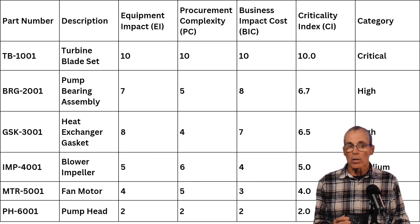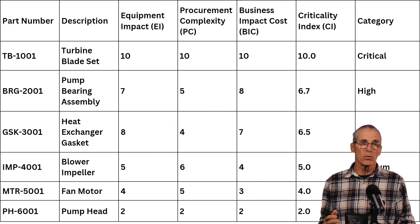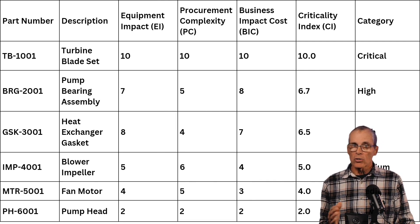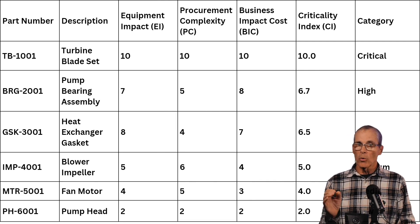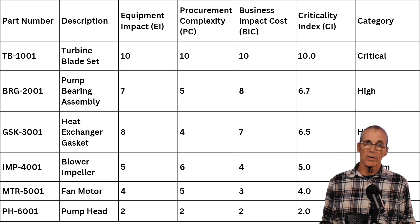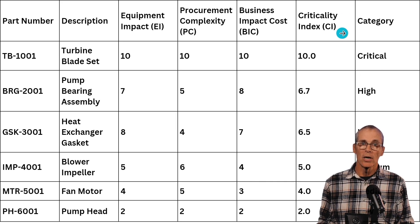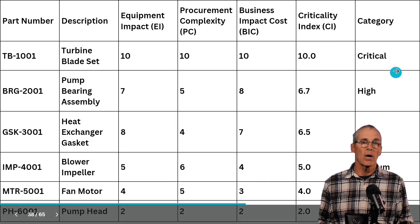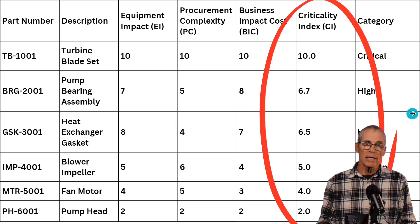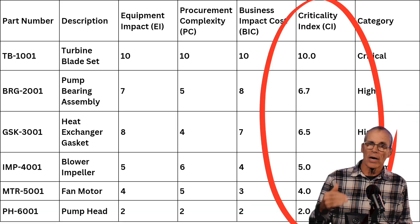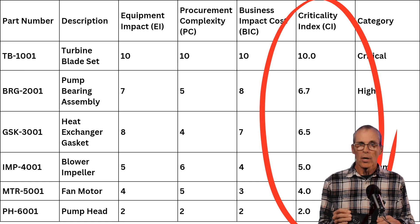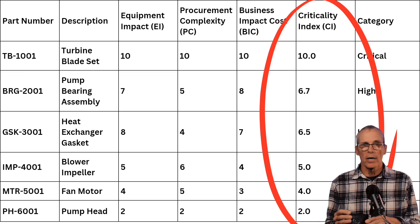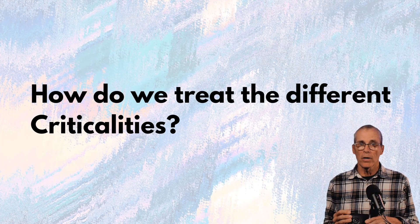Here's what the result will look like. You'll have the part, the description, the impact scores for each of the three factors, and then the category of whether it's critical, high, or medium. The criticality index also helps prioritize within a category — so between two high-rated items, you can see which one is a little more critical than the other.